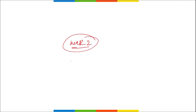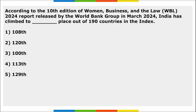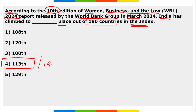So friends, those were your important current affairs for week 2 of the April month. Now let's move to some revision current affairs. According to the 10th edition of the Women, Business and the Law 2024 report released by the World Bank Group in March, India has climbed to 113th place out of 190 countries in the index. The index shows that women enjoy just 60 percent of the legal rights granted to men in India, while the global average is 64.2 percent.